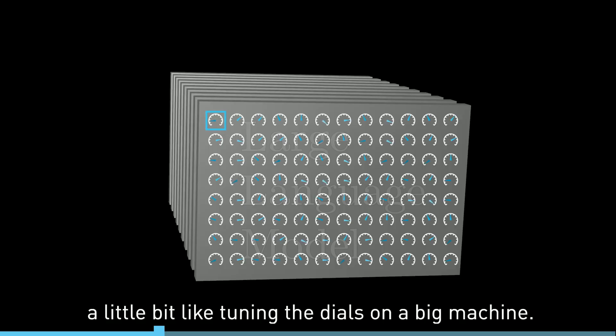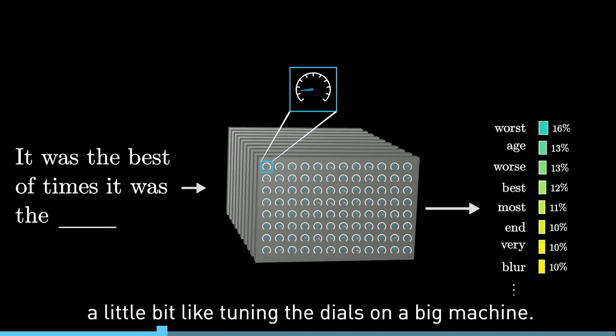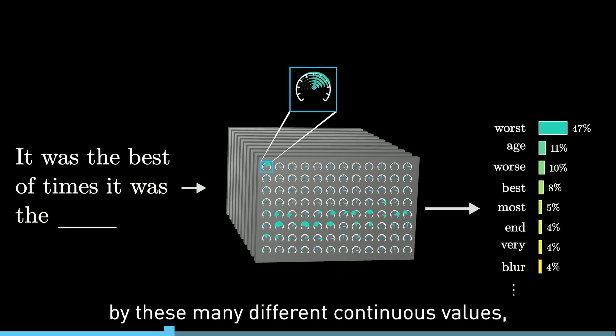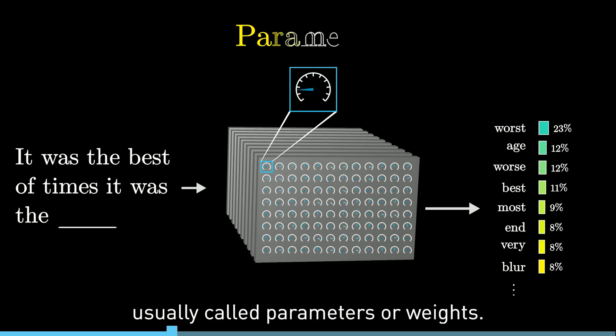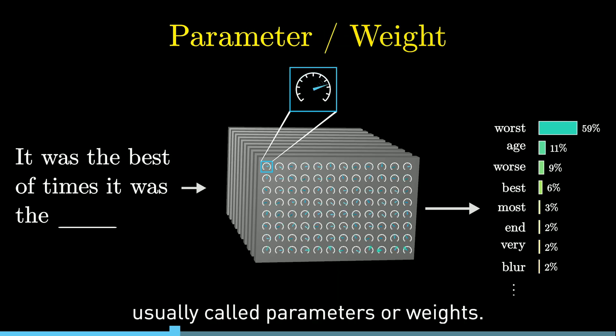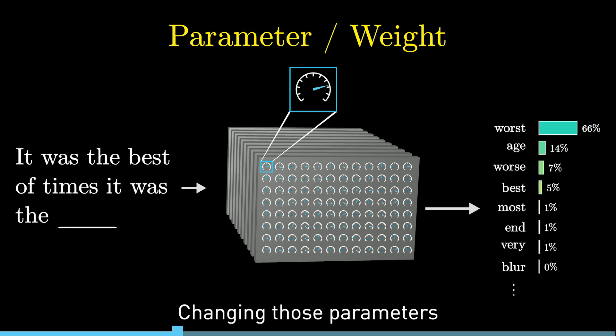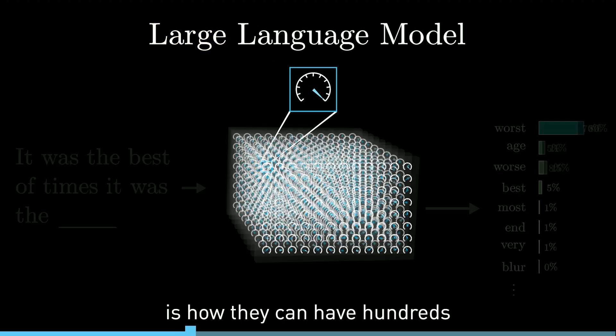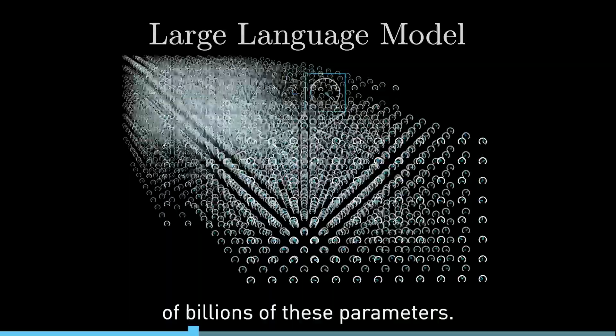You can think of training a little bit like tuning the dials on a big machine. The way that a language model behaves is entirely determined by these many different continuous values, usually called parameters or weights. Changing those parameters will change the probabilities that the model gives for the next word on a given input. What puts the large in large language model is how they can have hundreds of billions of these parameters.